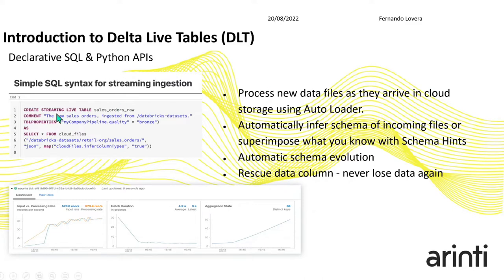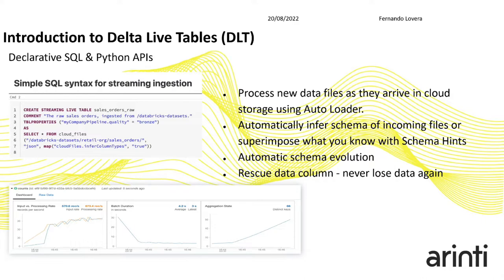In this example we're using something called a Streaming Live Table that is based on Cloud Files. Cloud Files underneath works with Auto Loader, which I'll explain in the next slide. Basically it detects if new files are arriving in your landing zone, and if they are, they get added to your processor and consumed. One interesting feature they sell for DLT is automatic schema evolution — if new columns are added to your files, the schema is updated and there will be logs about it, which helps with observability.